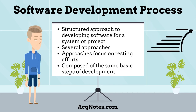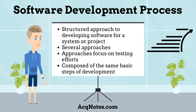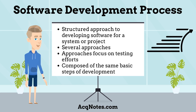What is the software development process? The software development process is the structured approach to developing software for a system or project, sometimes called the software development life cycle. There are several approaches that can be used, to include waterfall, spiral, and incremental development. These different approaches focus the testing effort at different points in the development process.